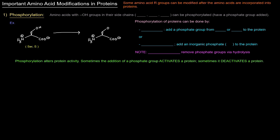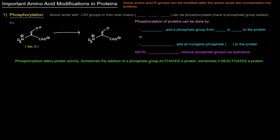The first one is phosphorylation. Amino acids with OH groups or hydroxyl groups in their side chains which include serine, threonine and tyrosine, can be phosphorylated which basically means they can have phosphate groups added to them. The phosphorylation of proteins can be done by two different types of enzymes. The first ones are kinases and kinases add a phosphate group specifically from ATP or from GTP to the protein that they are phosphorylating.